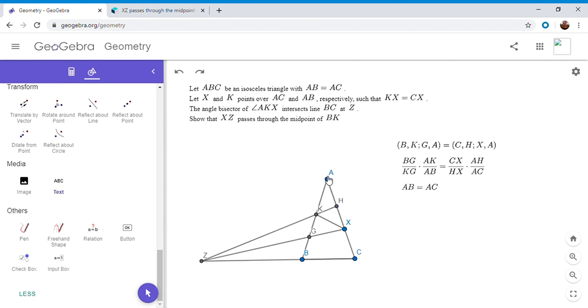We can use the angle bisector theorem on triangle AKH, so AK over AH is equal to KX over HX. We're given one more piece of information: KX equals CX. When you combine all four of these equations, you get exactly what you want.